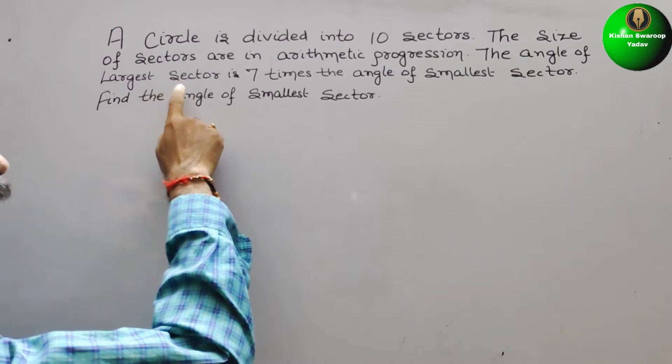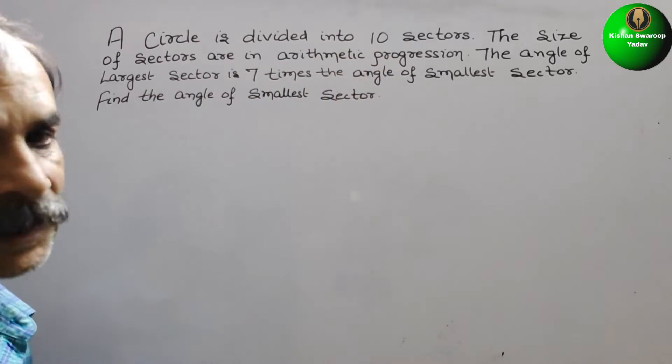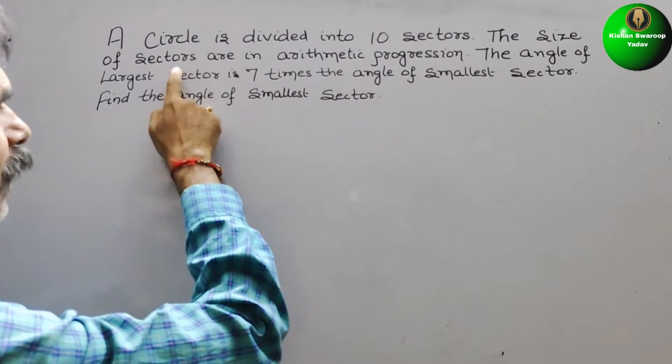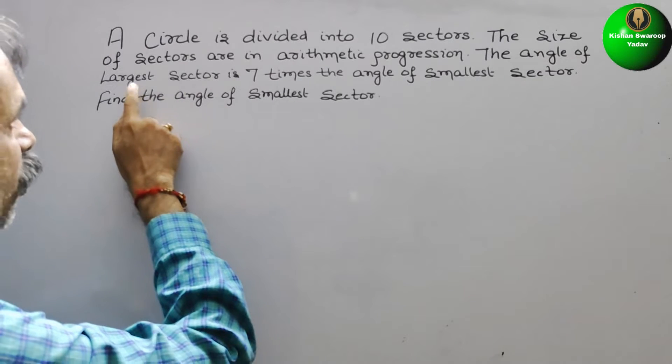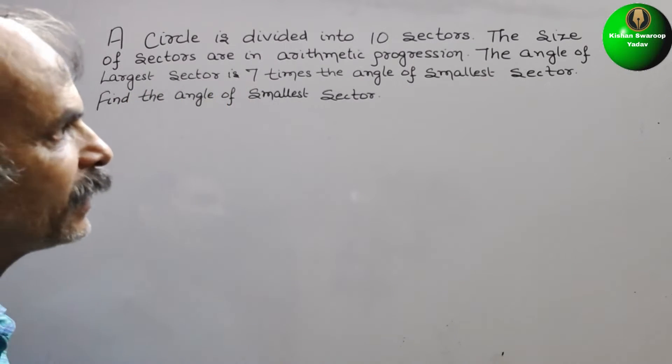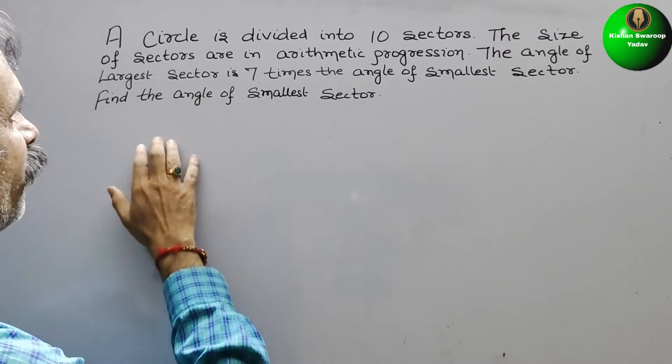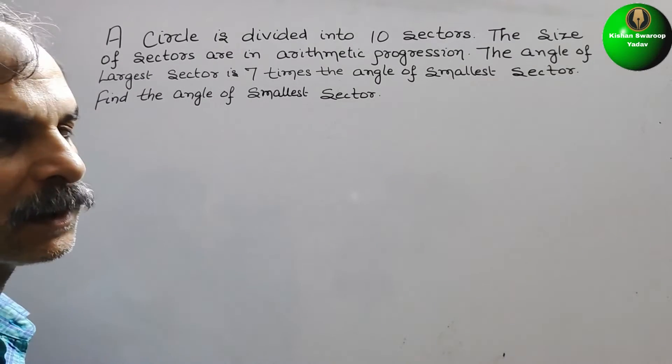Your question is: A circle is divided into 10 sectors. The size of sectors are in arithmetic progression. The angle of the largest sector is 7 times the angle of the smallest sector. Find the angle of the smallest sector.